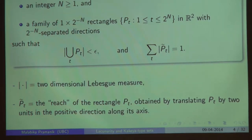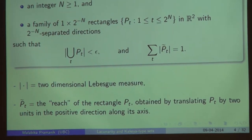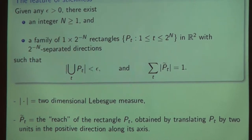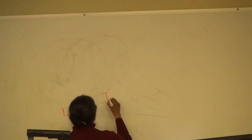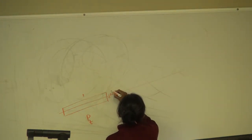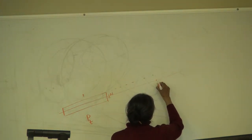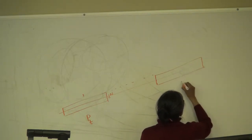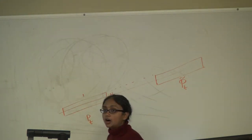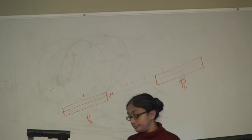On the other hand, if you look at what's known as the reach of these rectangles, they spring apart and become disjoint. The reach of a rectangle is the rectangle with the same orientation as the original, except translated along its axis. So if this is Pt, with dimensions 1 by 2-to-the-minus-n, and you move it one unit or three units, that would give you Pt-tilde. The Pt-tildes are all pairwise disjoint, while the Pts are most definitely not.